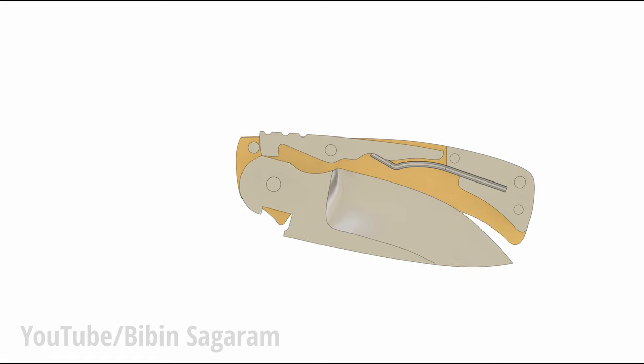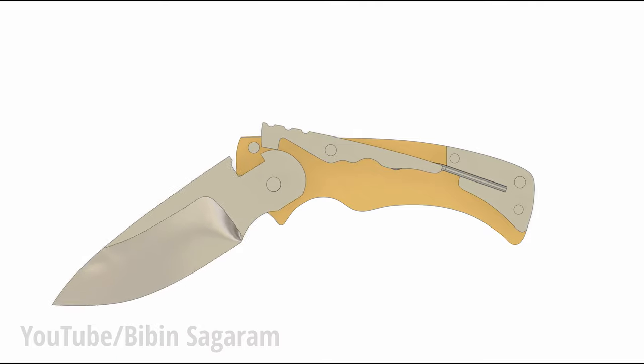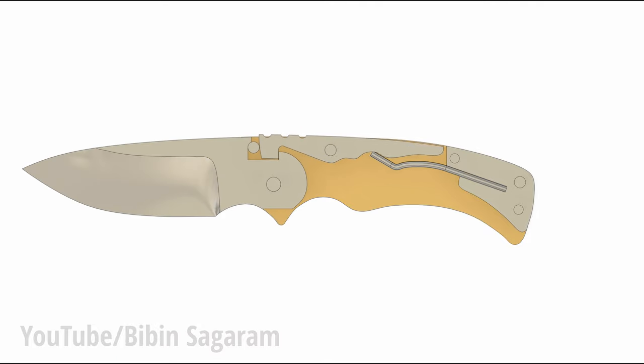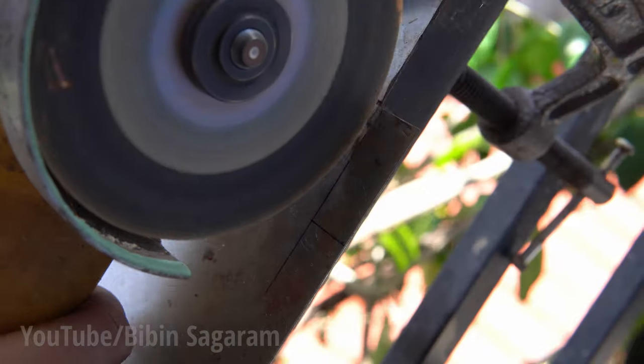The spring is supposed to move along with the lock but I was not able to animate it. Normally I use paper templates while making knife. Here I will be using a mini CNC to drill holes for the knife since accuracy is really important.